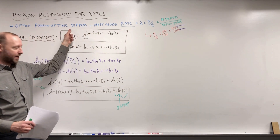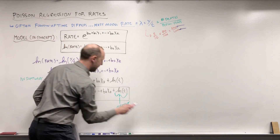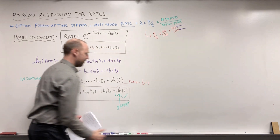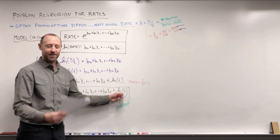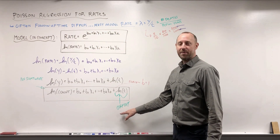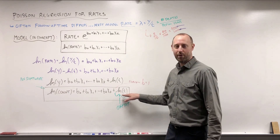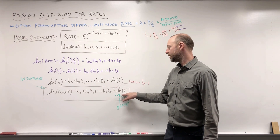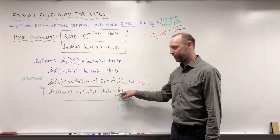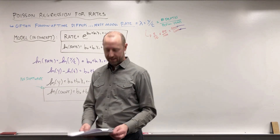In software, what we're actually doing is modeling the log count — the log number of times the event occurred — as a linear function of the x's, just like we did with counts. But if everyone has different follow-up times, we need to adjust for that. The log(time) term forces its coefficient to be one, because we don't want the effect of follow-up time to be weighted more or less than it should be. This is referred to as an offset in the model — we're adjusting for the time, forcing its coefficient to be one.